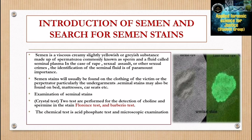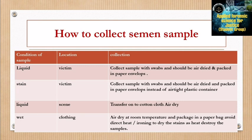Examination of seminal stains: two tests are performed for the detection of choline and sperm — the Florence test and the Barberio test. The chemical test is the acid phosphatase test, along with microscopic examination. To collect semen samples: for liquid semen from a victim, collect with a swab, air dry, and pack in a paper envelope. For a stain from a victim, collect with a swab, air dry, and pack in a paper envelope rather than an airtight plastic container.